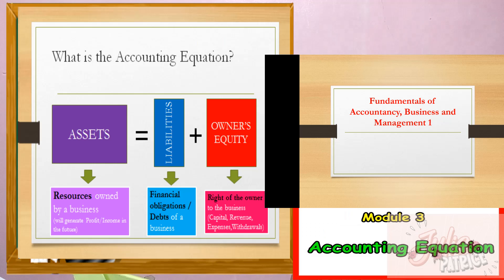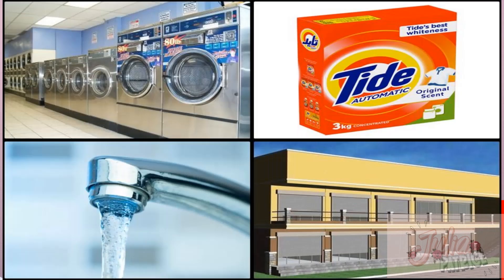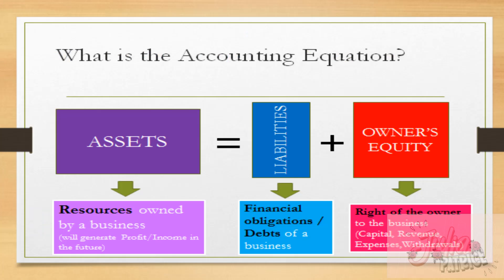So what is the accounting equation? Assets equals liabilities plus owner's equity. Assets are the resources owned by a business; they will generate profit or income in the future. Let's have the example of a laundry business. In a laundry business, there is a location or place where the business owns or rents. It also has washing machines, detergent, water, employees, and so on. Everything owned by the laundry business is considered an asset, and mixing them together will generate profit in the future.